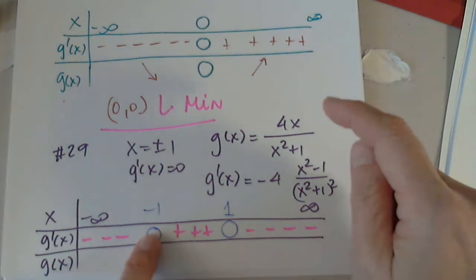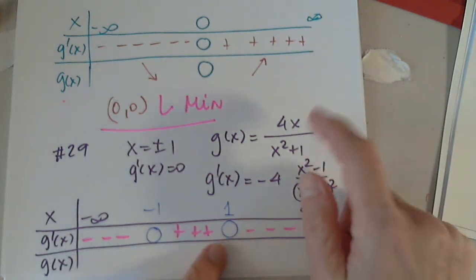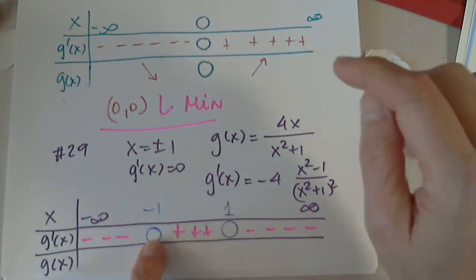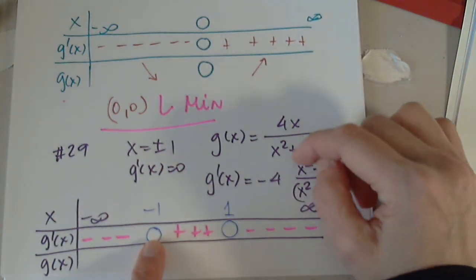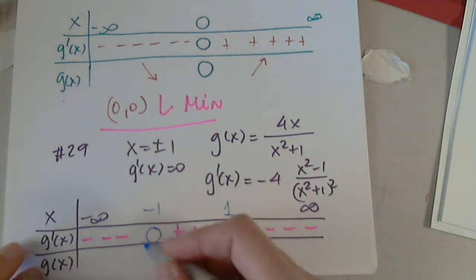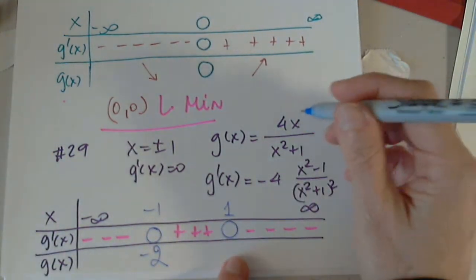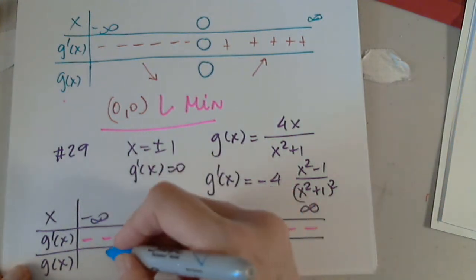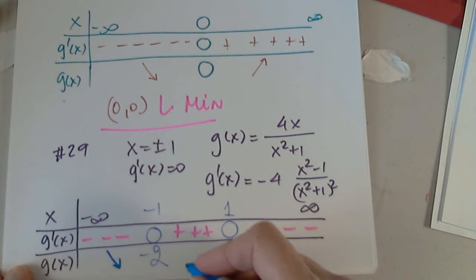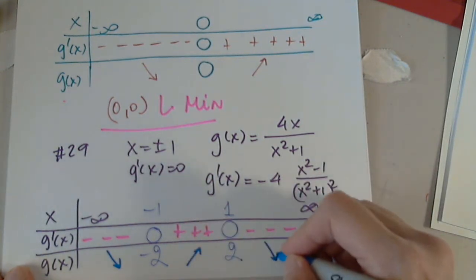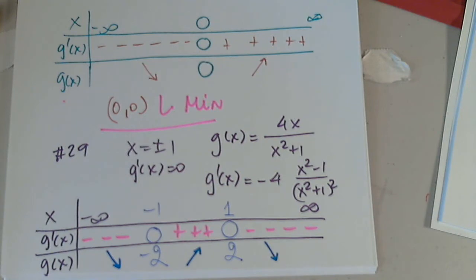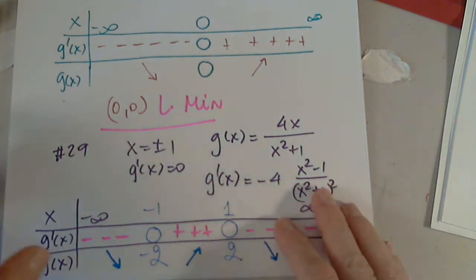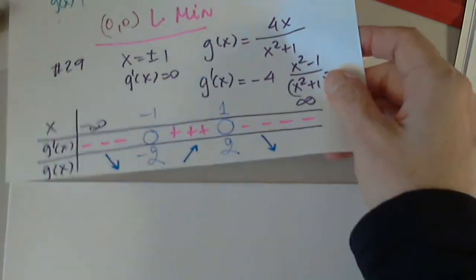I need to plug in negative 1 in the function and positive 1 in the function. When I plug in negative 1, the top is negative 4 and the bottom is 2. Negative 4 divided by 2 is negative 2. When I plug in 1, I have 4 divided by 2, which is 2. So now, I conclude this. Decreasing, increasing, decreasing. Now, I have to establish if (-1,-2) is anything and (1,2) anything.